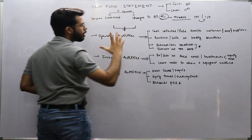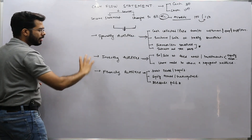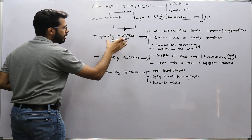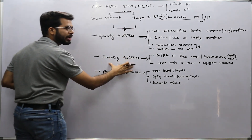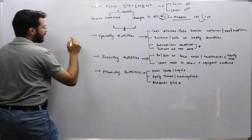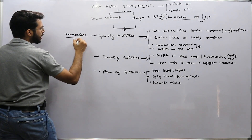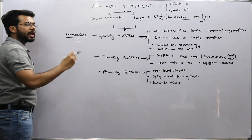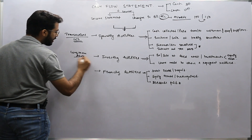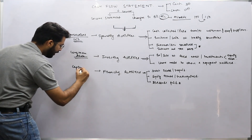Now let's understand what the cash flow statement looks like. The cash flow statement is basically a three-categorized statement. Using the indirect method, we have: operating activities — what cash flow happened from operations; investing activities — what cash flow happened from investments; and financing activities — what cash flow happened from financing. Operating activities relate to day-to-day transactions, goods and services-based transactions. Investing activities basically involve long-term assets, whether fixed assets or investments. Financing activities relate to the capital structure of the company.